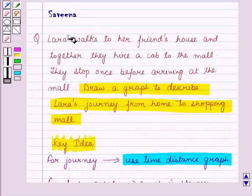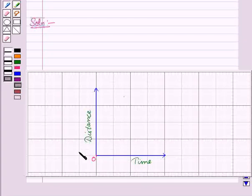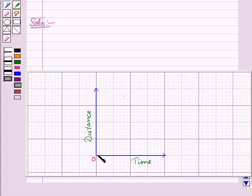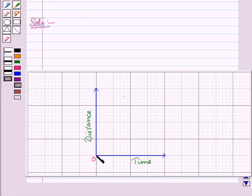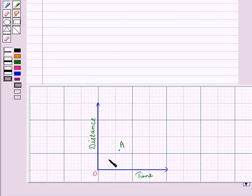Now we are given that Lara starts from home and walks to her friend's house. So her speed will be constant. So the graph will start with a steady straight line. Now we mark O for the starting point. And this is the point from where Lara starts her journey, that is from her home. From this point, she moves to her friend's house. Now let that point be A. Now since her speed is constant, the graph will be a steady straight line from point O to A.